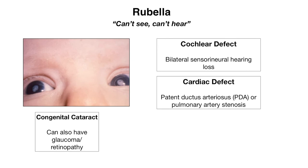Let's now go over our next infection: rubella. Remember this as 'can't see, can't hear,' because babies will have issues with both the eyes and the ears. Babies can have congenital cataracts, but also other ocular issues like glaucoma — increased intraocular pressure — as well as retinopathy. They can have cochlear defects leading to bilateral sensorineural hearing loss, as well as cardiac defects like a patent ductus arteriosus or PDA, and pulmonary artery stenosis.